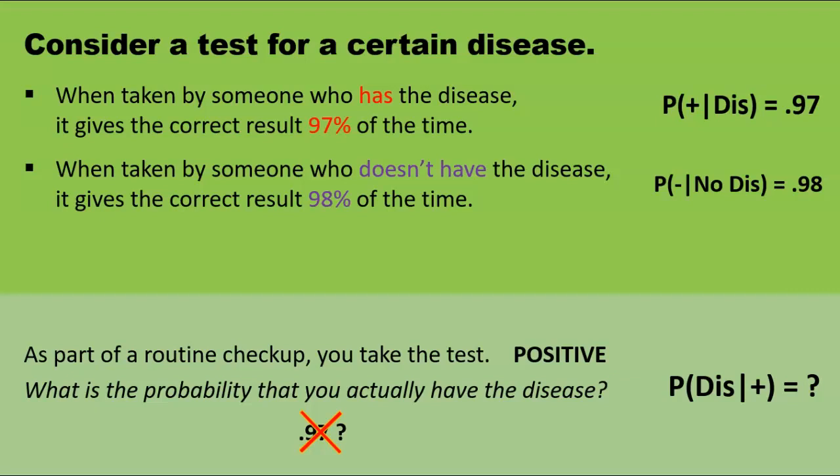Let's suppose, in this case, that the disease affects 1% of the general population. Now we have enough information to solve our problem. Before we do so, pause the video for a moment and try to guess roughly what the answer will be. Most people guess that the probability of having the disease, given the positive test, is somewhere between 95 and 99%.